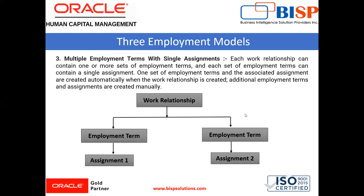Next is multiple employment term with single assignment. In this employment model, a work relationship can contain one or more sets of employment terms, and each employment term can have only one assignment at any point of time. One set of employment terms and the associated assignment are created automatically; additional employment terms are created manually. There is one work relationship, two employment terms, and a different single assignment under each.